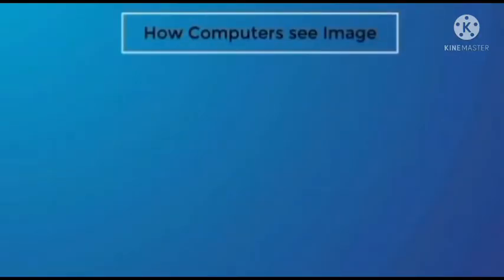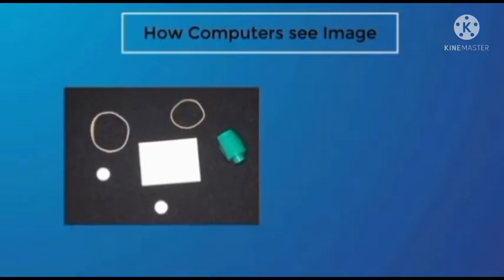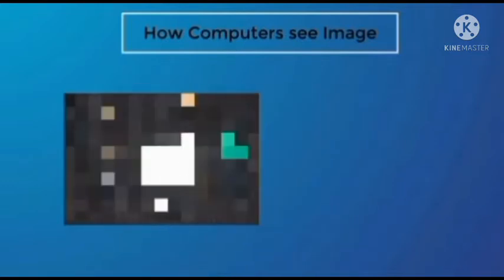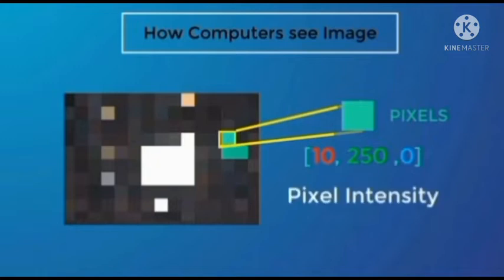But machines don't see the world the way we see it. To a computer, an object in an image appears as an array of square blocks known as pixels, each assigned with a numerical value which indicates the intensity of the pixel.